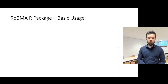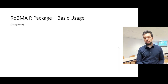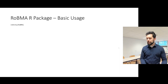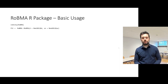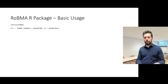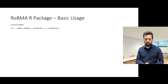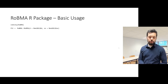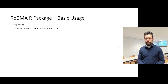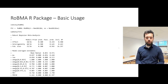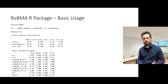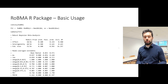For basic usage, you open R or RStudio, load the package, and assuming you have a dataset with effect sizes and standard errors already computed, you simply use the robma function and place the effect sizes and standard errors into the corresponding arguments. By default, robma estimates the ROBMA-PSMA ensemble described in one of our papers, consisting of 36 different models: 18 assuming absence of the effect, 18 assuming absence of heterogeneity, and 32 assuming presence of publication bias.